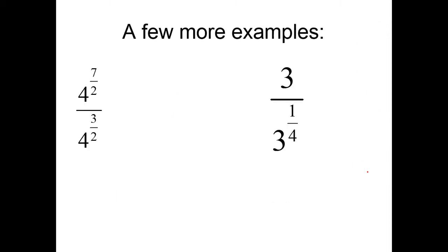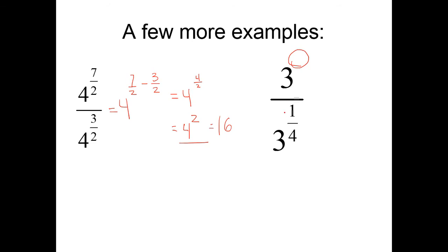Here are a few more examples to look at. When you have two like bases on top of each other, you can subtract your exponents: 4 to the 7/2 minus 3/2 gives 7 minus 3 equals 4, so 4 to the 4/2. Since 4 divided by 2 equals 2, that's 4 to the 2nd, which is 16. This next one trips a lot of people up because there's no exponent written. But remember — what exponent can we always assume is sitting there? A 1. So I have 3 to the 1 over 3 to the 1/4. Subtracting: 3 to the 1 minus 1/4 — if I have a dollar and take away a quarter, I have 3/4 left. So 3 to the 3/4.